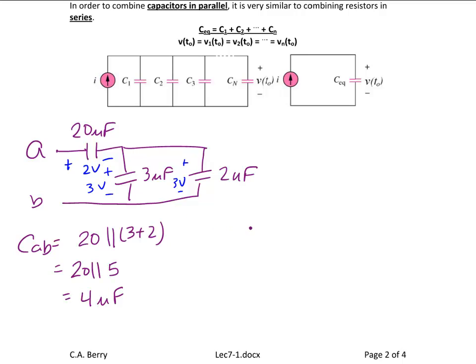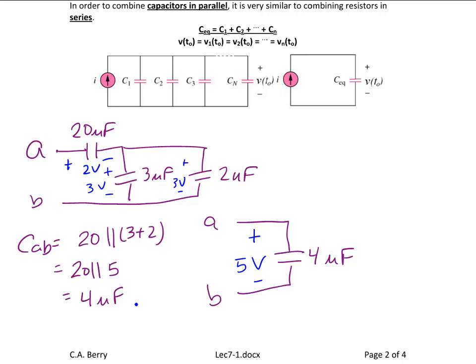Notice the 3 µF and 2 µF are in parallel, so they must have the same voltage. Drawing the equivalent circuit for terminals A and B, we have a 4 µF capacitor. Using KVL, the initial voltage across that 4 µF capacitor would be 2 volts plus 3 volts, so the initial voltage is 5 volts.